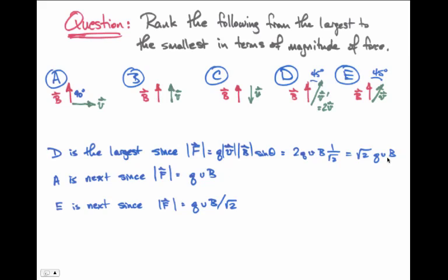Both B and C have a magnetic force of zero because the angle between the velocity and the B field is either zero or 180 degrees, and the sine of both zero and 180 is zero.